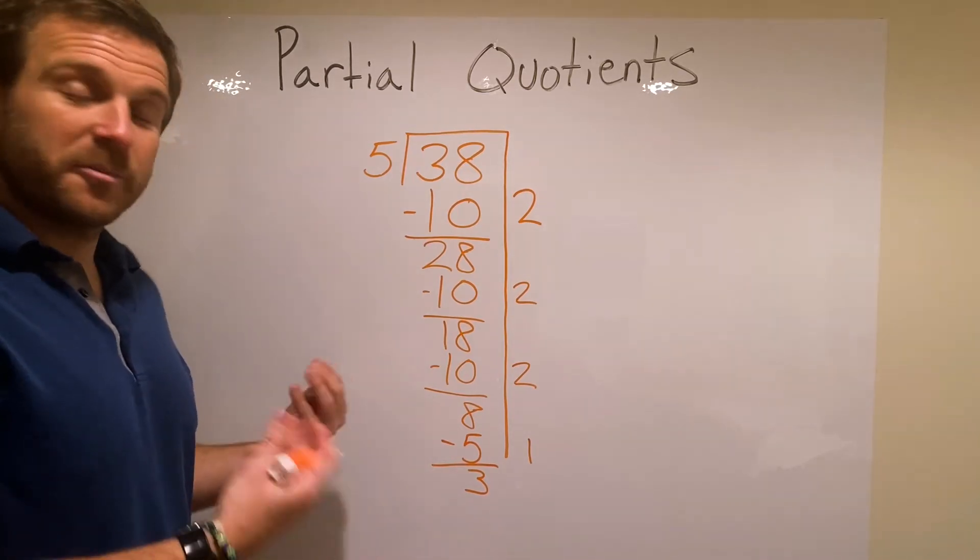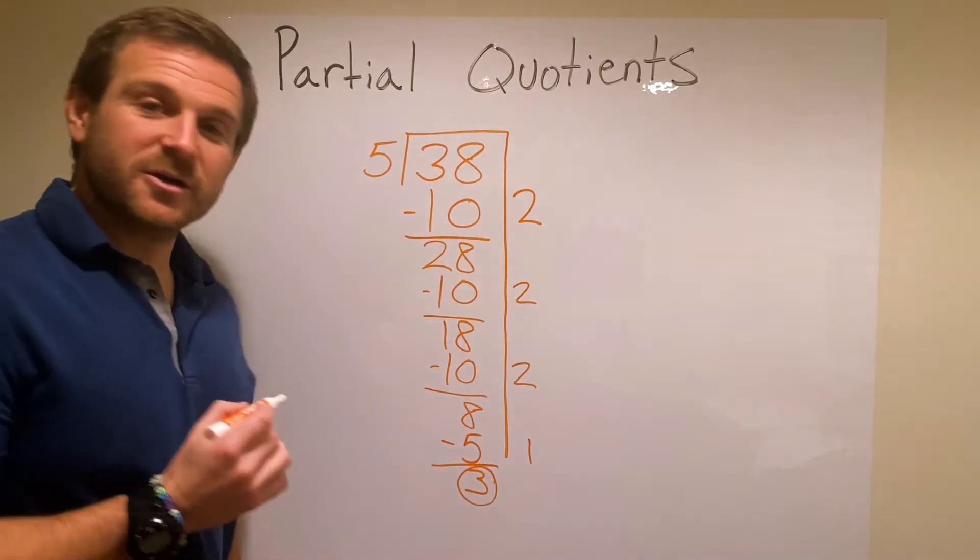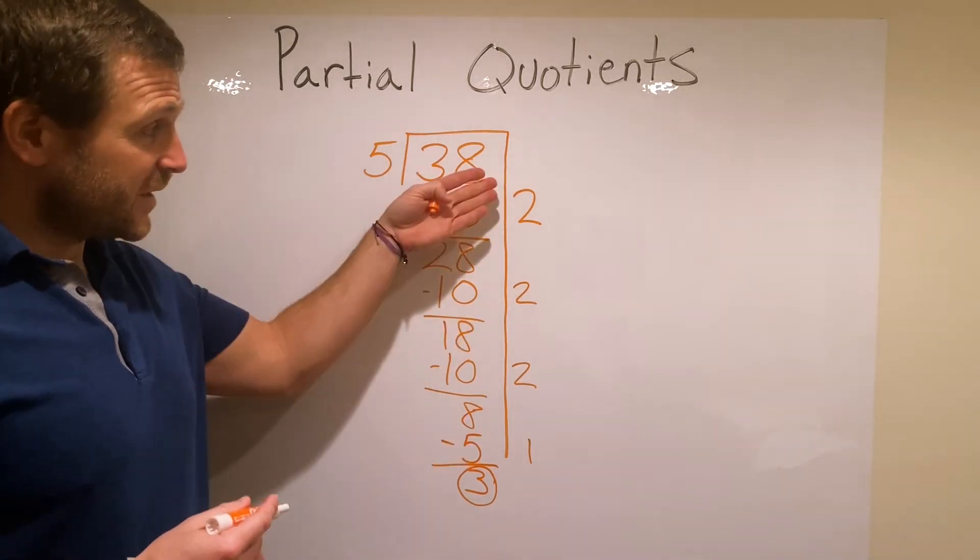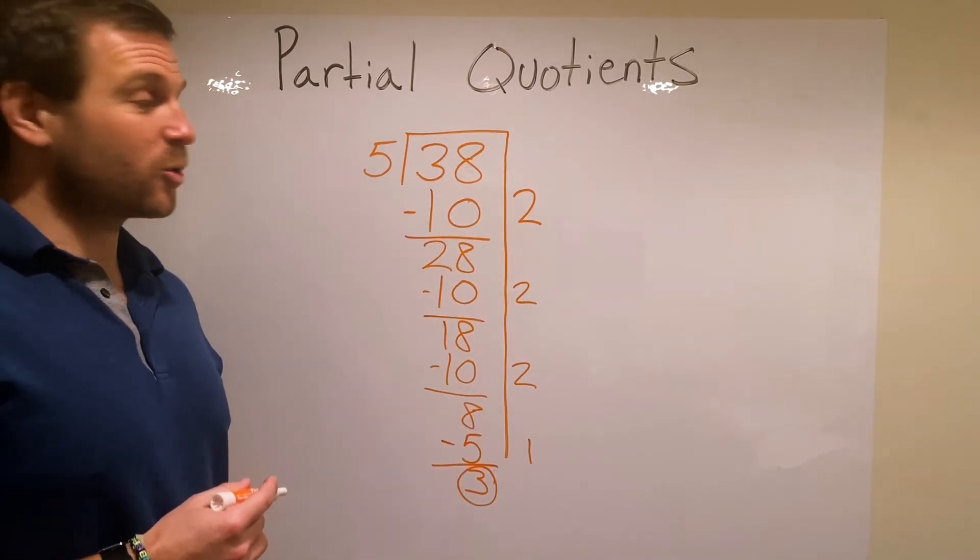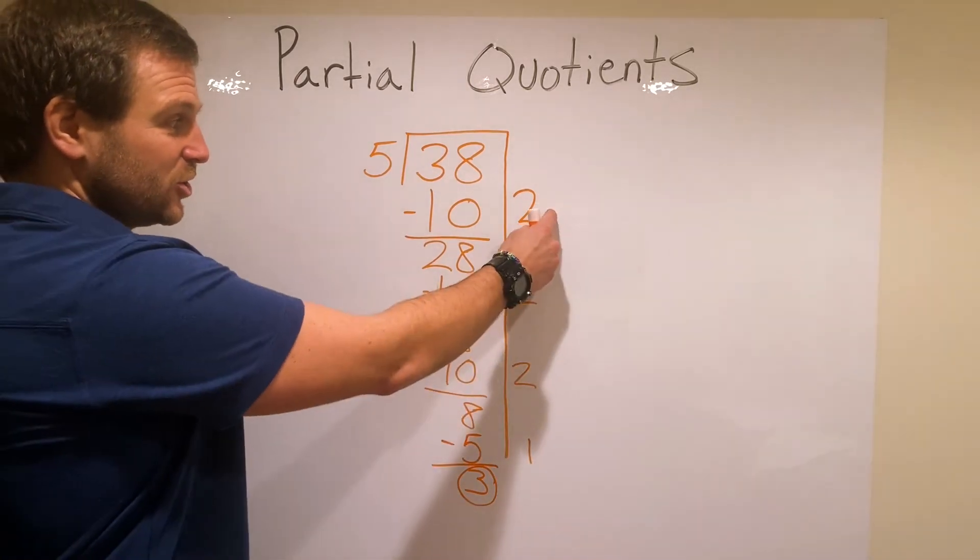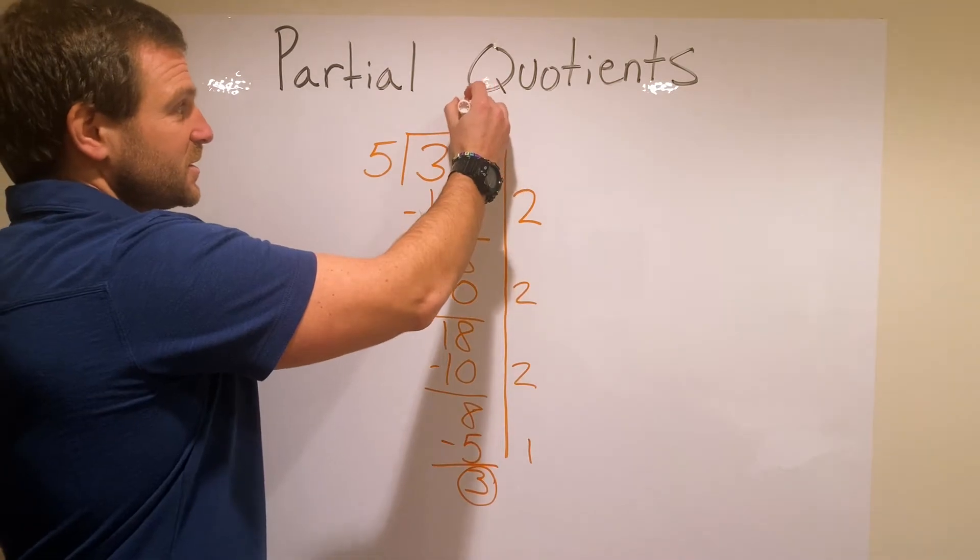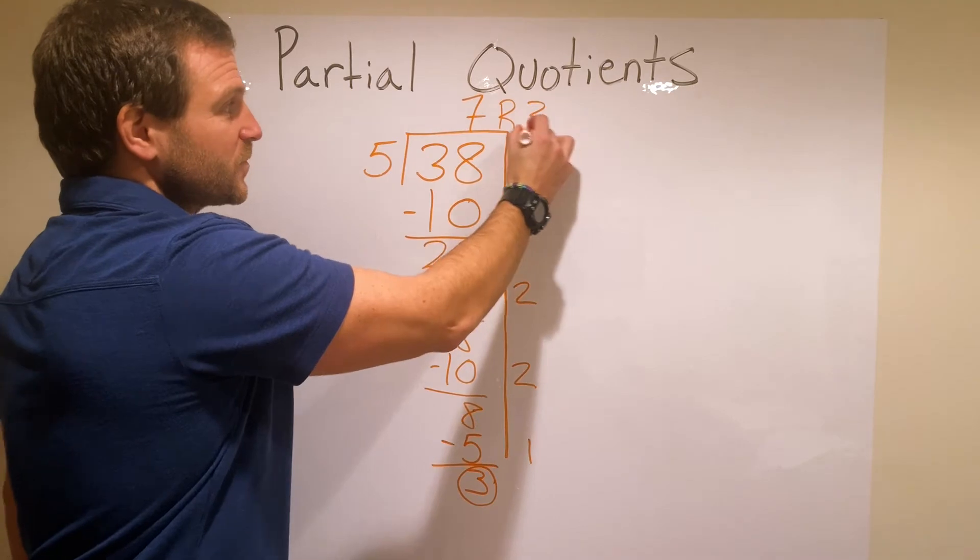If I try and remove a group of 5, I'm going to be left over with decimals. So what I do is I circle that. That's going to become my remainder. And then my answer is just the sum, adding up all my partial quotients on the right side there. So 2 plus 2 plus 2 plus 1, which is 7 remainder 3.